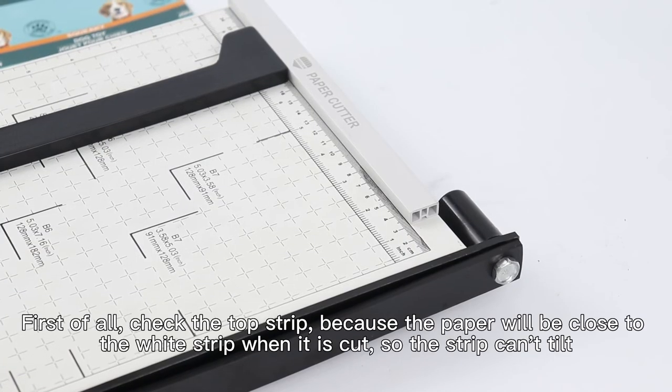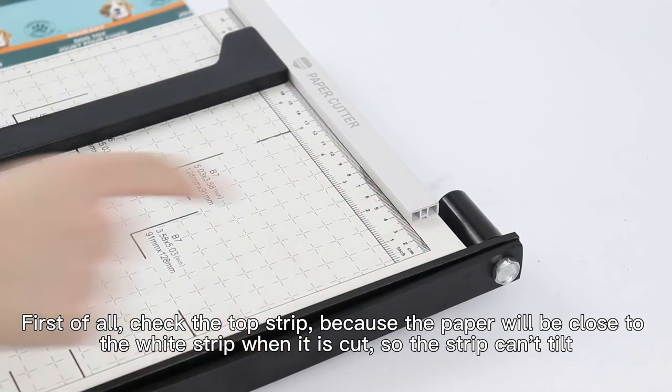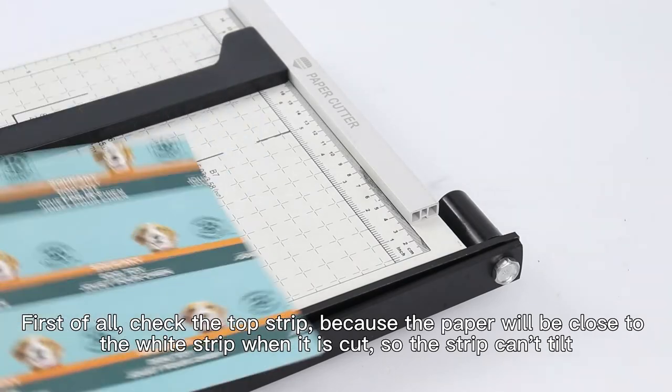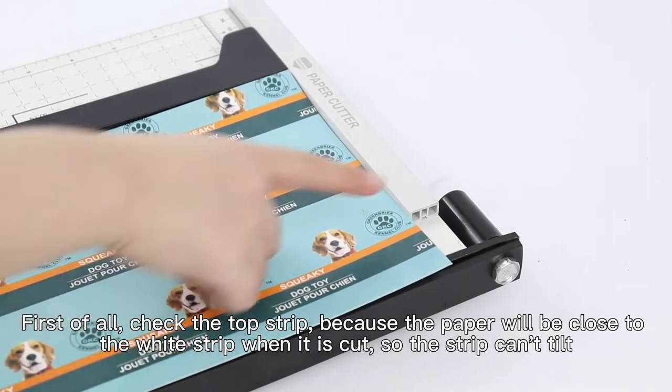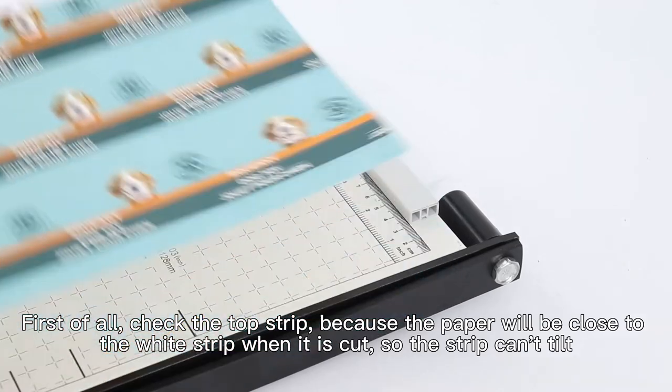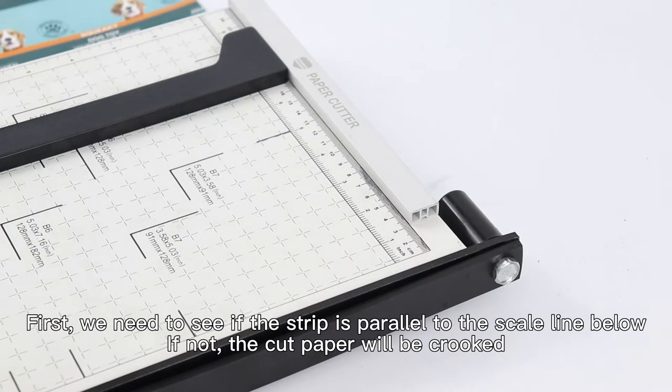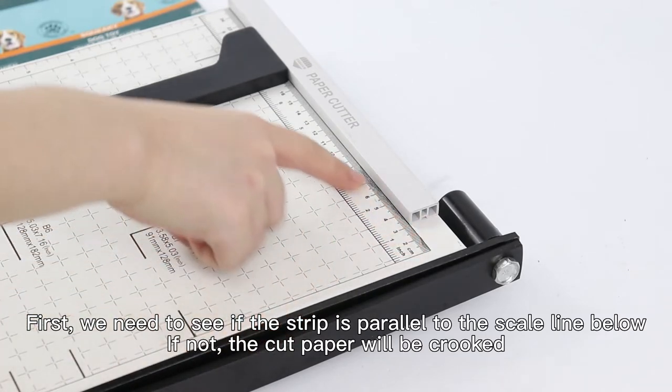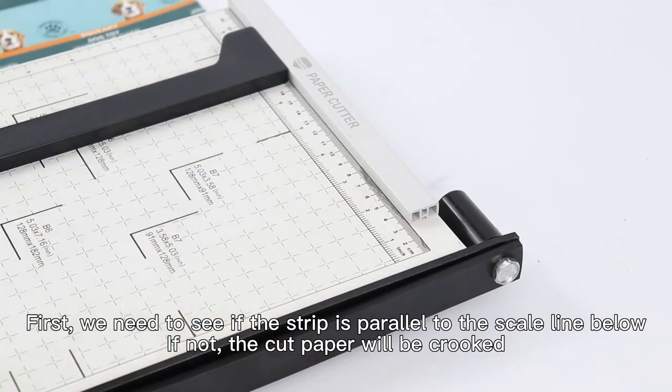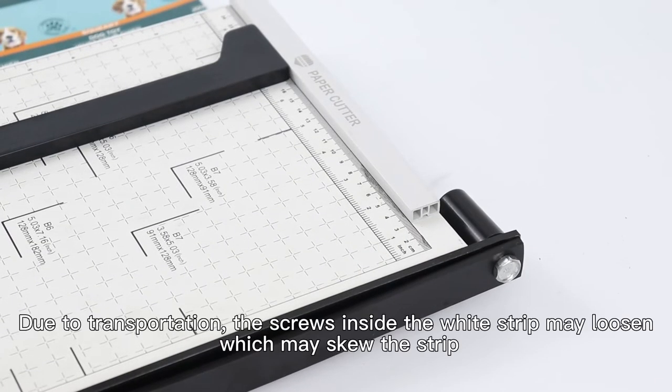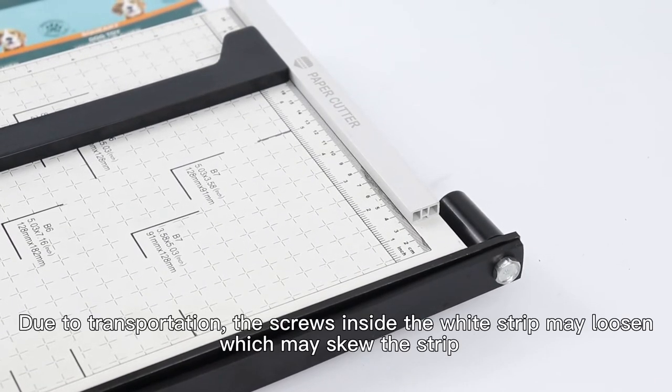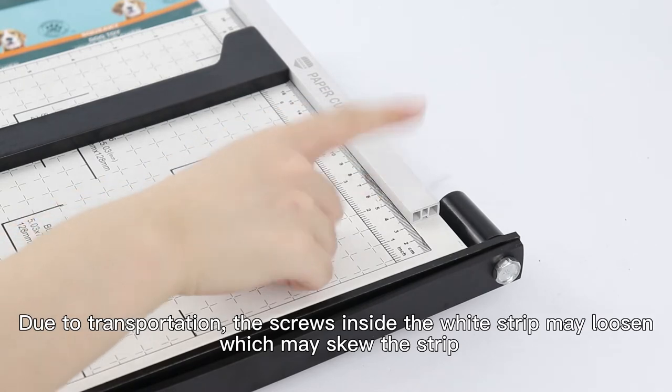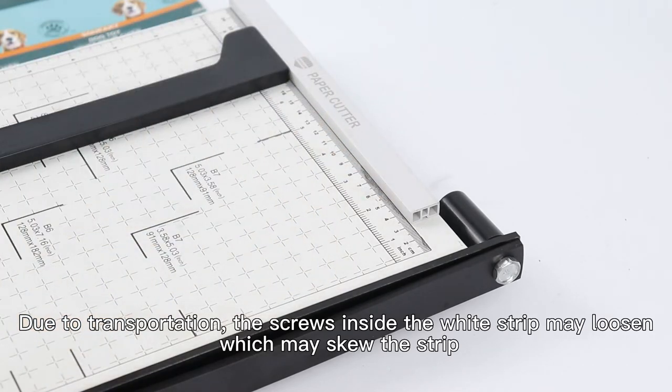First of all, check the top strip because the paper will be close to the white strip when it is cut, so the strip can't tilt. We need to check the strip is parallel to the scale line below. If not, then the cut paper will be crooked. Due to transportation, the screws inside the white strip may loosen, which may skew the strip.